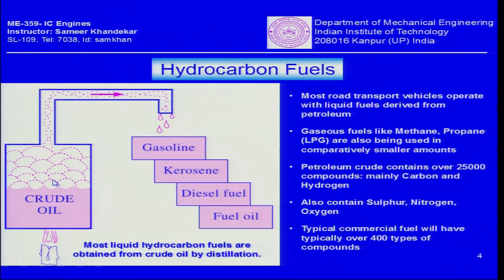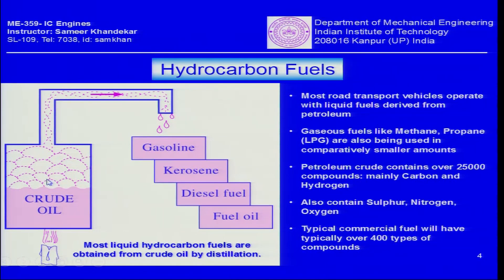A quick review of how hydrocarbon fuels are obtained: most liquid hydrocarbon fuels come from crude oil by distillation. The crude oil from the ground is heated up, and depending on the molecular structure — from C1, C2, C3 up to C8, C10, or C20 — the different components evaporate at different temperatures. This vapor is cooled and, depending on the cooling temperature, you can obtain gasoline, kerosene, diesel fuel, or heavy fuel oil.